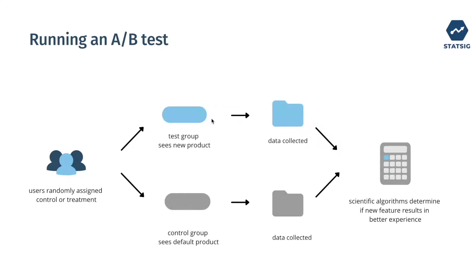This could be a front-end change like website design or button color, or a back-end change like a search algorithm. We gather user interaction data from the two groups and use scientific algorithms to determine if the given feature we're releasing results in a better experience for users.